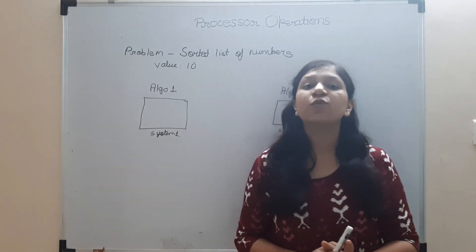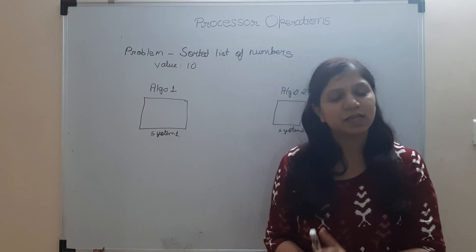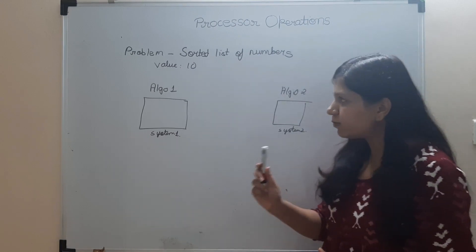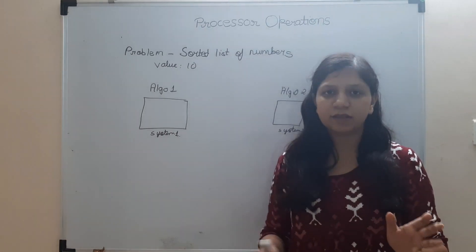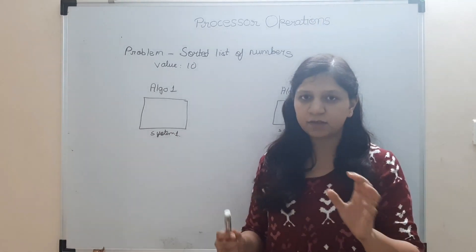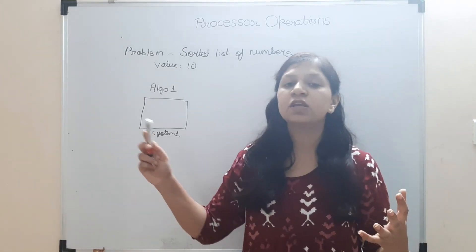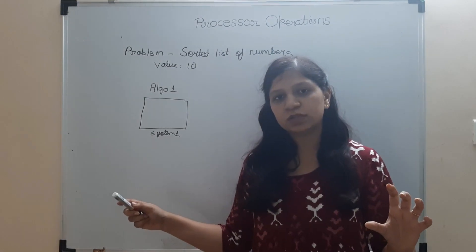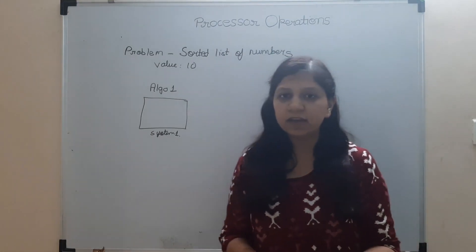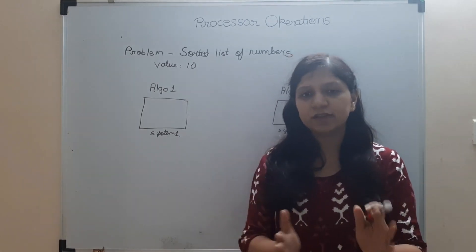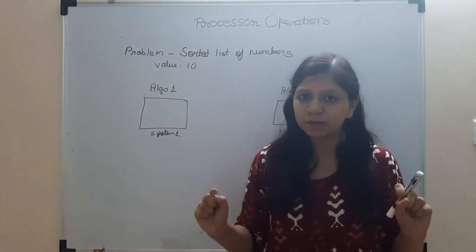In this tutorial we are going to see what are processor operations and why we are talking about processor operations. You have a problem statement given to you: you have a sorted list of numbers, meaning numbers are already arranged in ascending order, smallest number being kept first and the larger number next. You are given a value 10 and you need to search in this list if this number is present or not. So simply it's a search on a list of numbers.